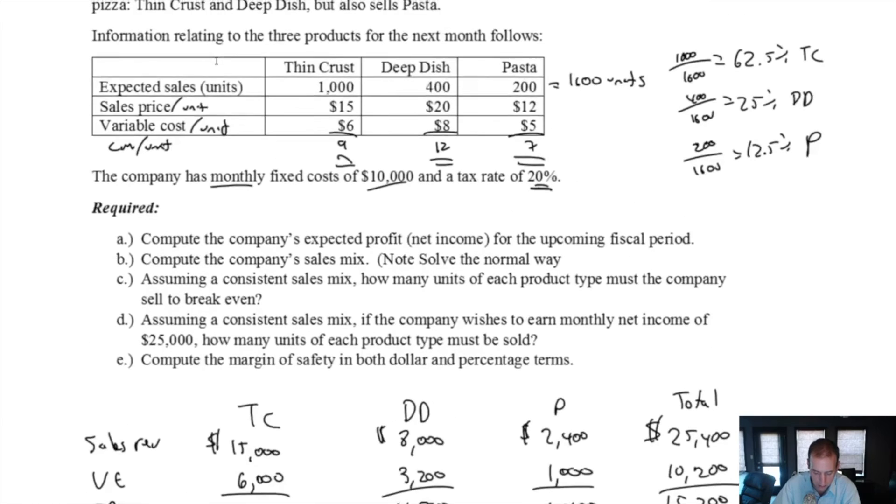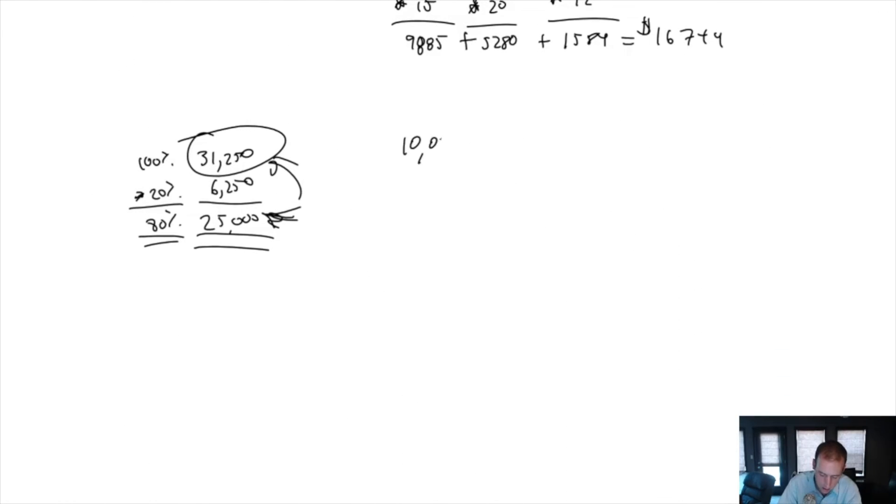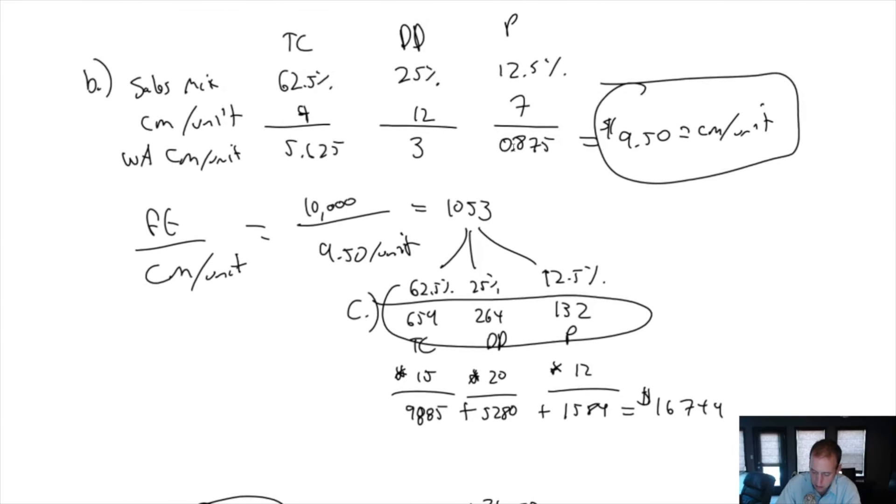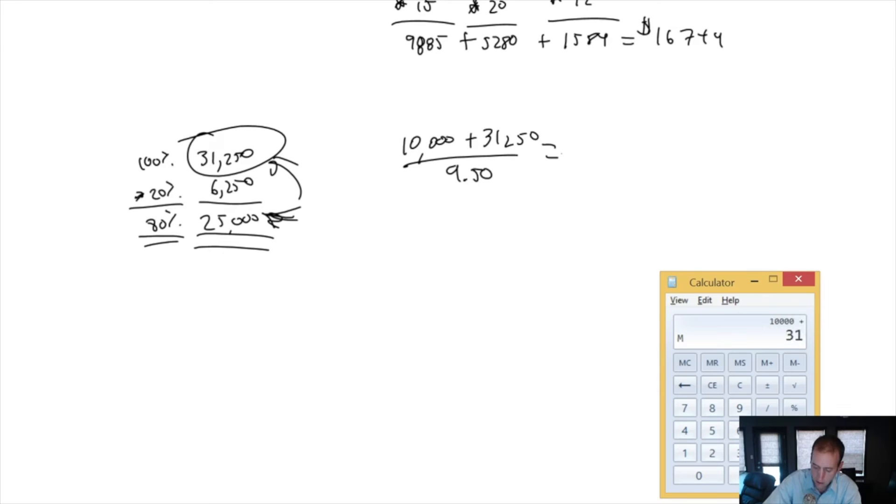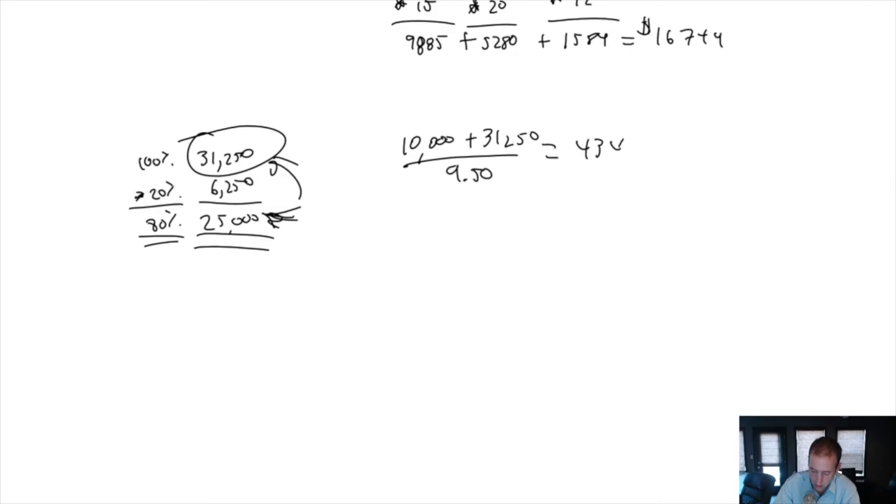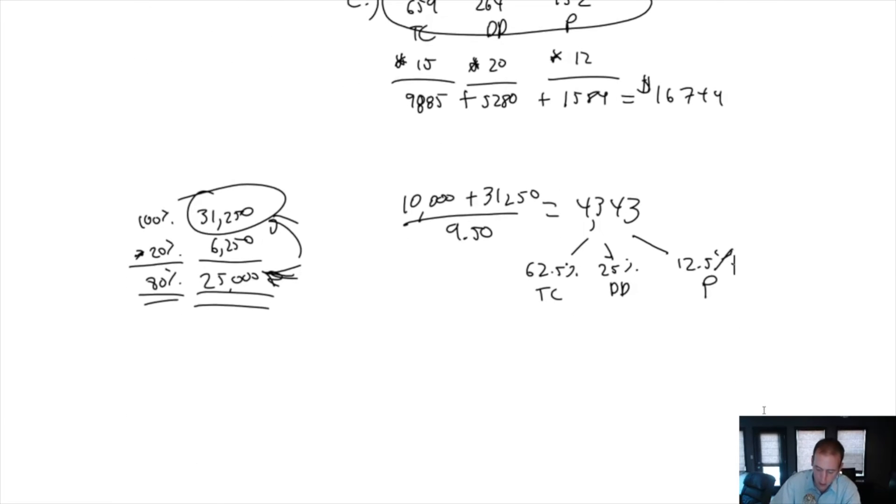Remember the formula: fixed expenses, $10,000, plus target, $31,250, divided by our contribution margin per unit, which we computed as $9.50. $10,000 plus $31,250 divided by $9.50, we're rounding up to 4,343. So we need to sell 4,343 entrees. Which ones? 62.5% of them are going to be thin crust, 25% are going to be deep dish, and 12.5% are going to be pasta dishes.